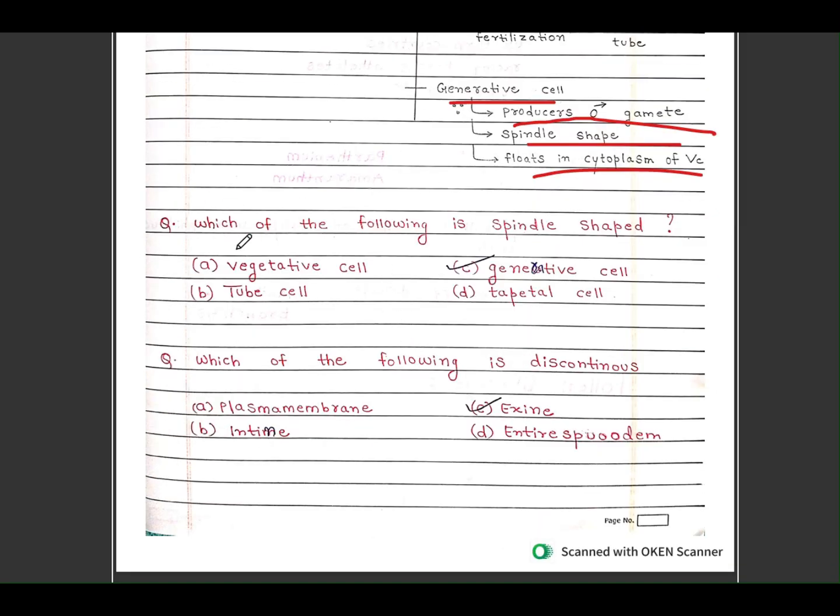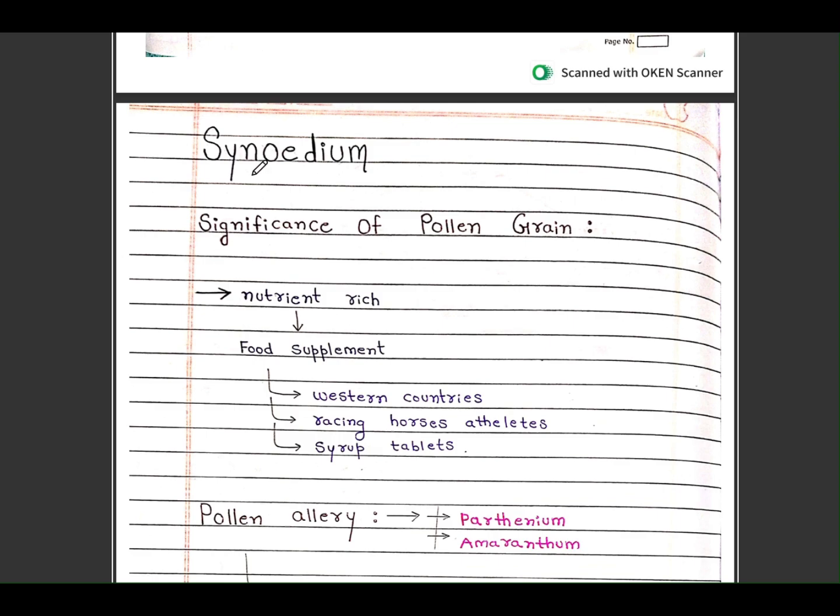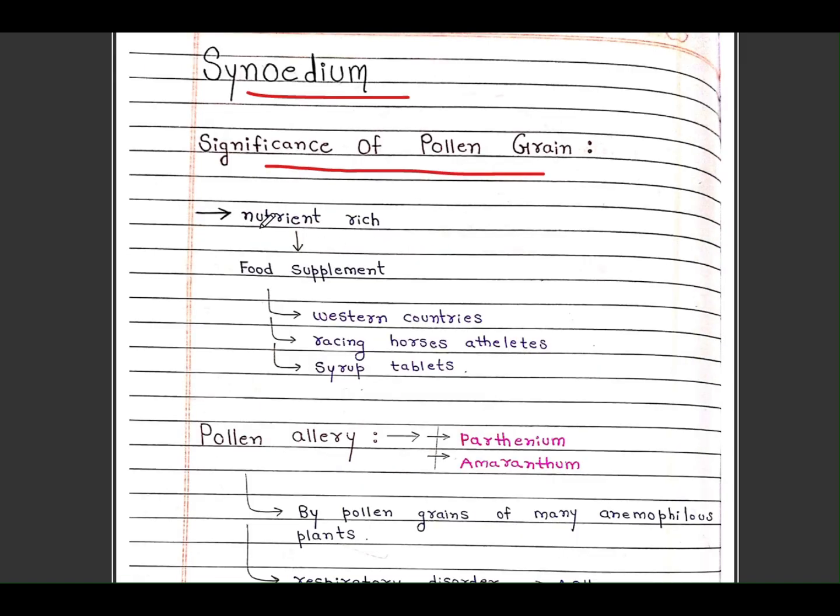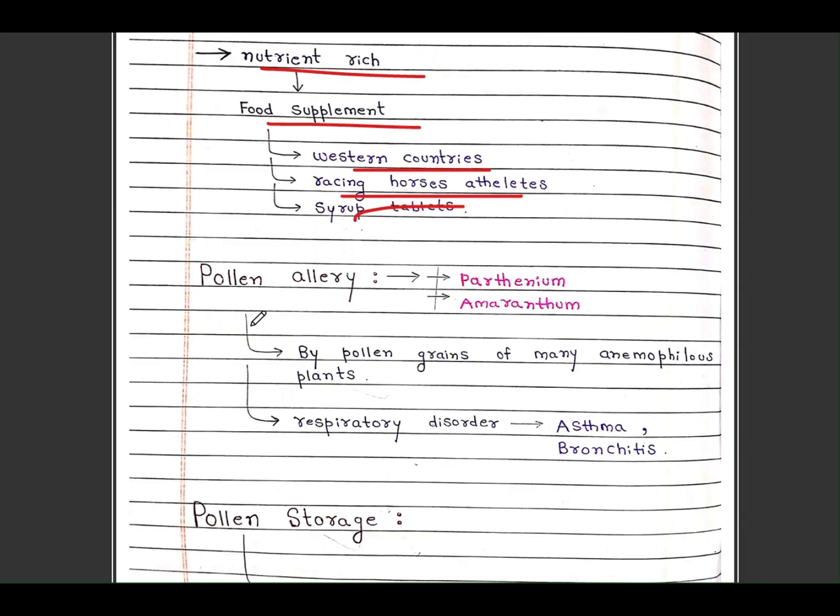Some important questions are there, you can see here. Significance of pollen grains: nutrition-rich, used as food supplement in Western countries for racing horses and athletes as syrups and tablets. Pollen allergy from Parthenium and Amaranthus by pollen grains causes many respiratory disorders like asthma and bronchitis.